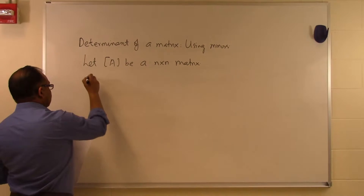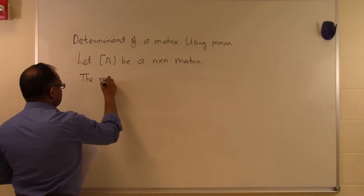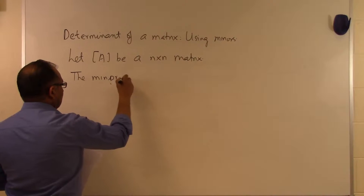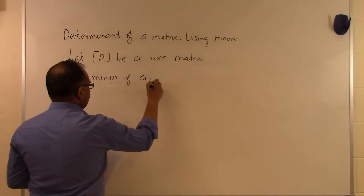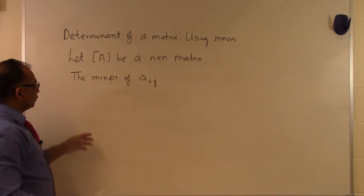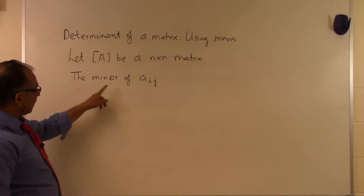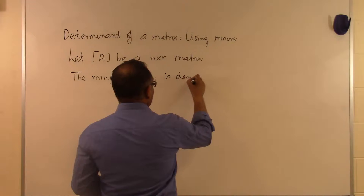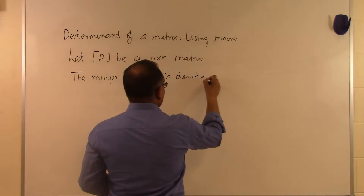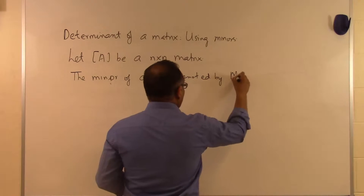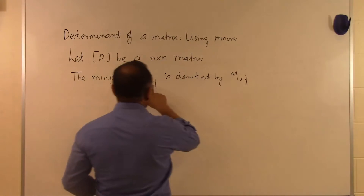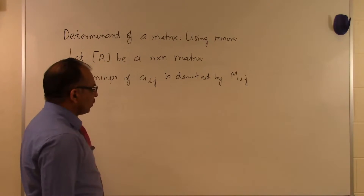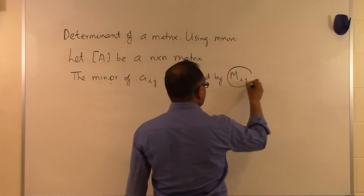Let the minor of A_ij be denoted by M_ij. A minor corresponds to each element of the A matrix, so the i,j-th element corresponds to a minor called M_ij.